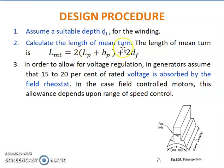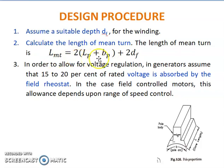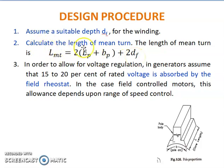The next step is to calculate the length of mean turn. To calculate the length of mean turn we use the formula: Lmt = 2(Lp + Wp) + 2 × 2 × Df, where Lp is the length of the pole and Wp is the width of the pole, giving the total length of mean turn for the winding.